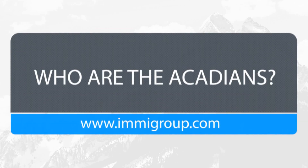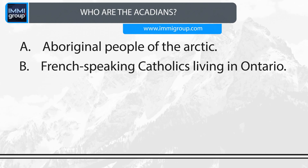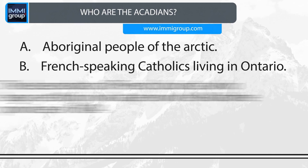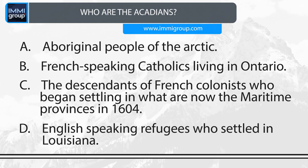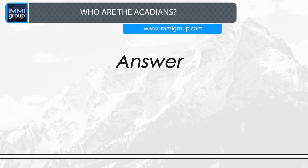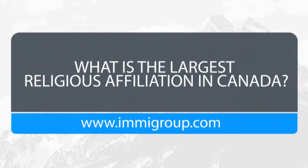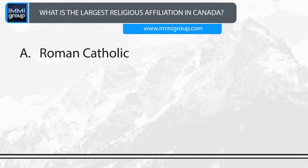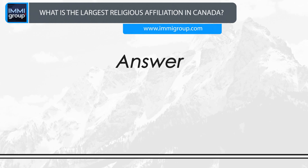Who are the Acadians? A. Aboriginal people of the Arctic. B. French-speaking Catholics living in Ontario. C. The descendants of French colonists who began settling in what are now the Maritime Provinces in 1604. D. English-speaking refugees who settled in Louisiana. Answer: The descendants of French colonists who began settling in what are now the Maritime Provinces in 1604. What is the largest religious affiliation in Canada? A. Roman Catholic. B. Muslim. C. Jewish. D. Hindu. Answer: Roman Catholic.